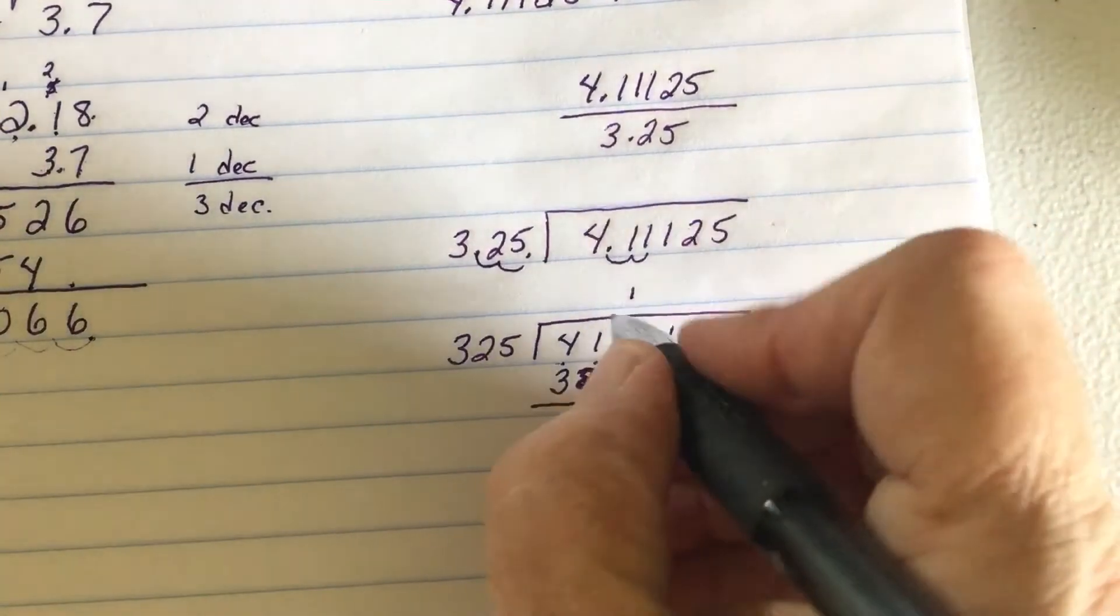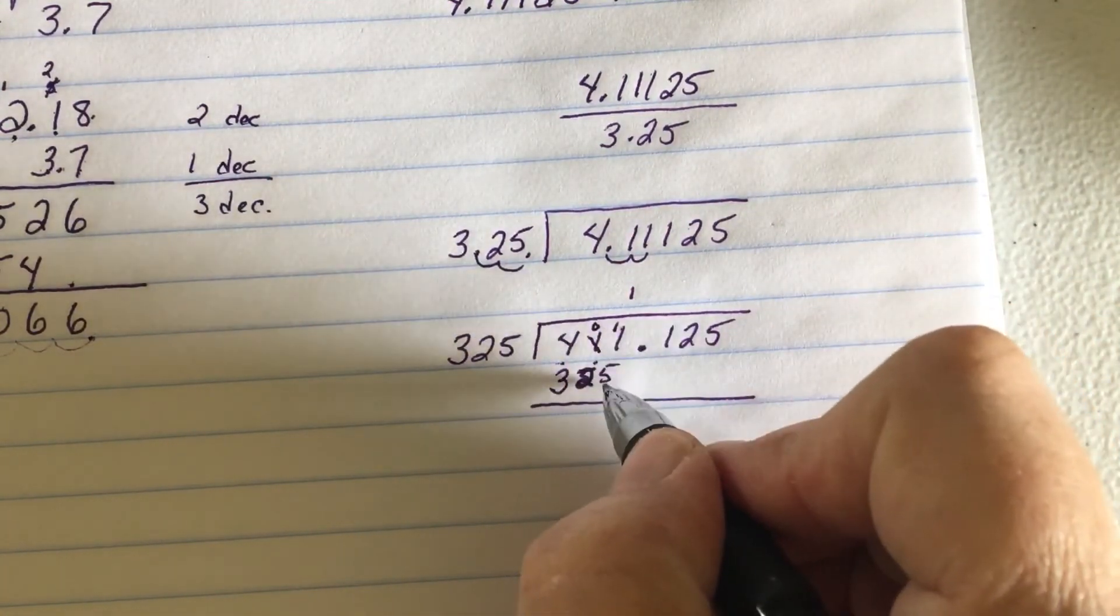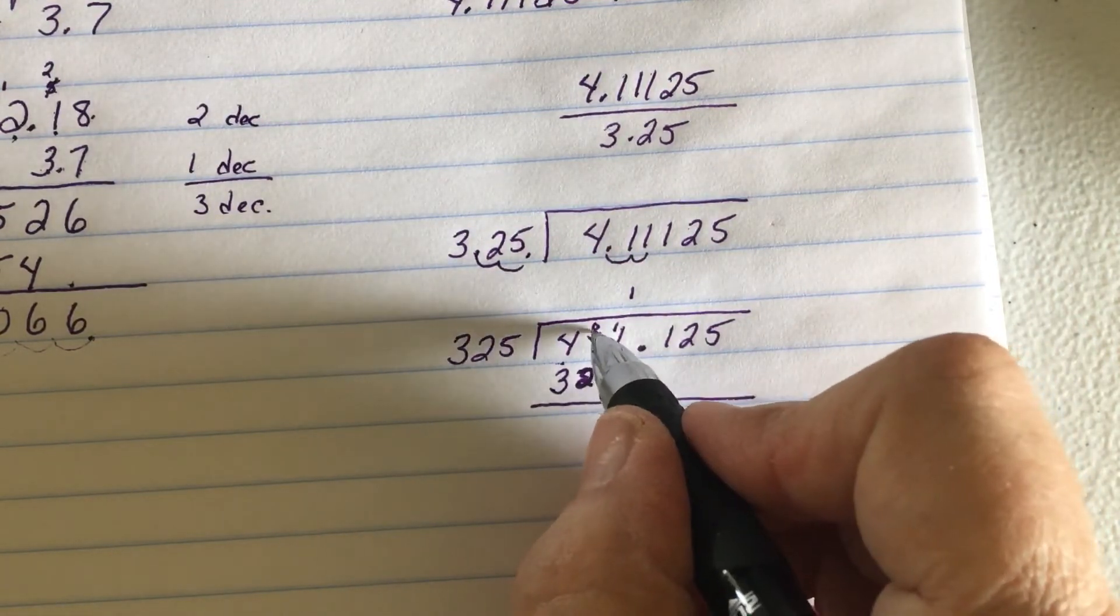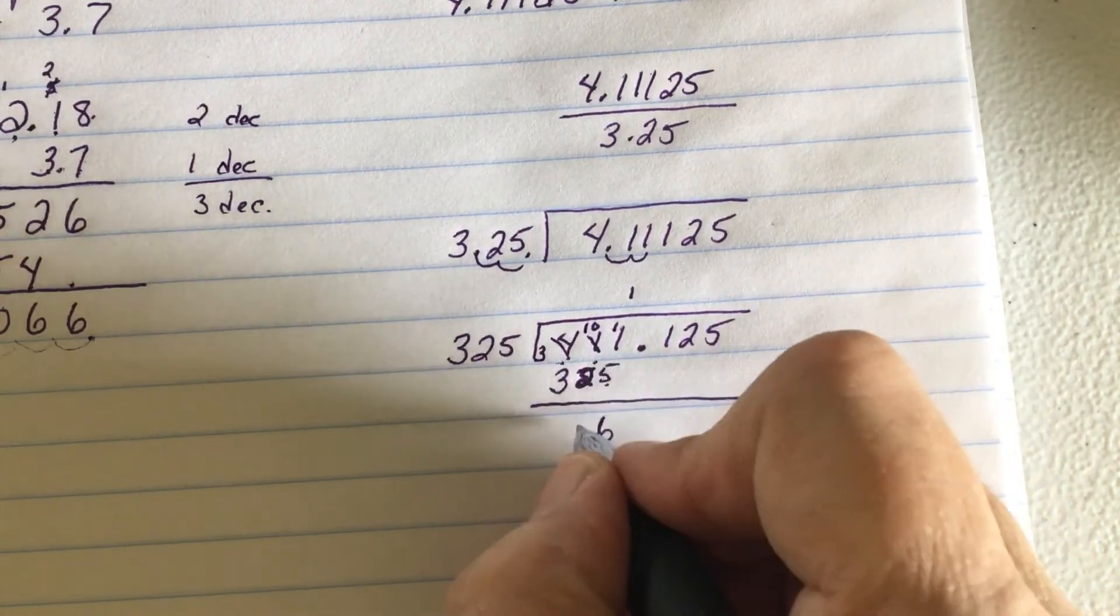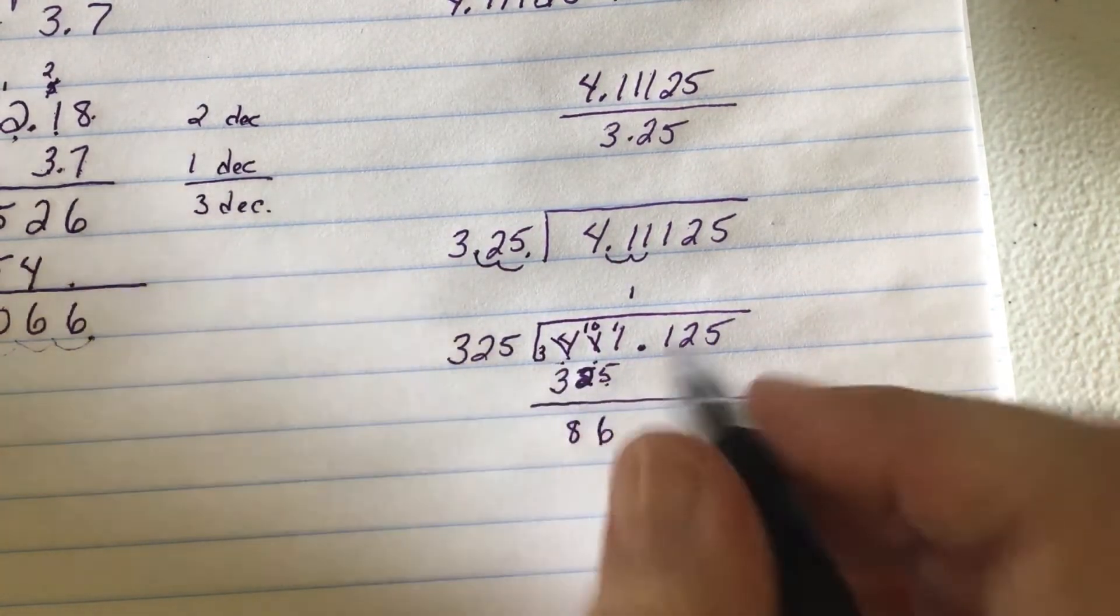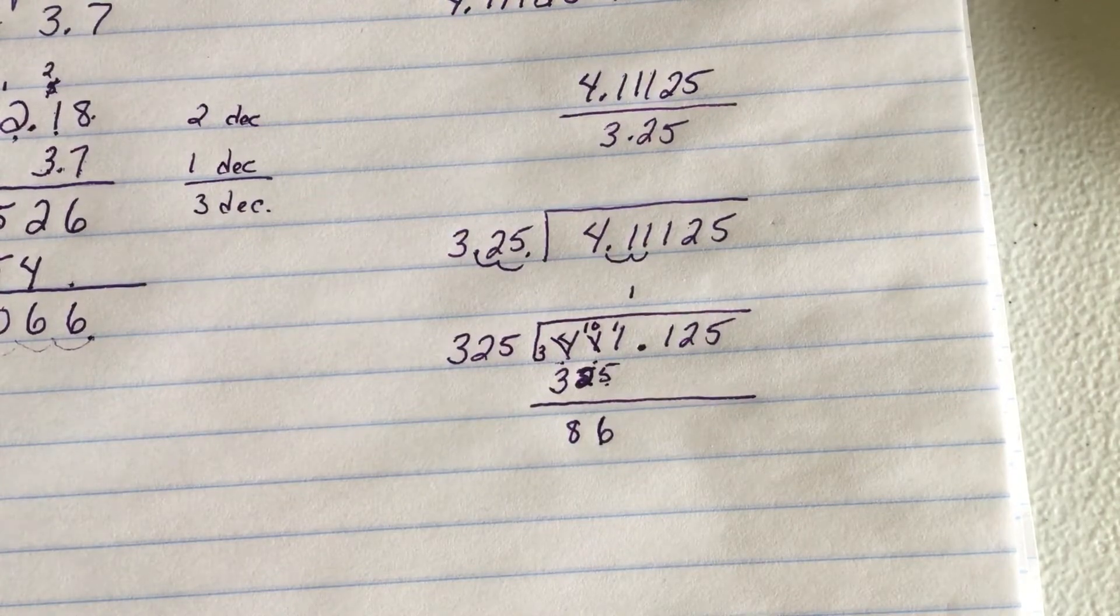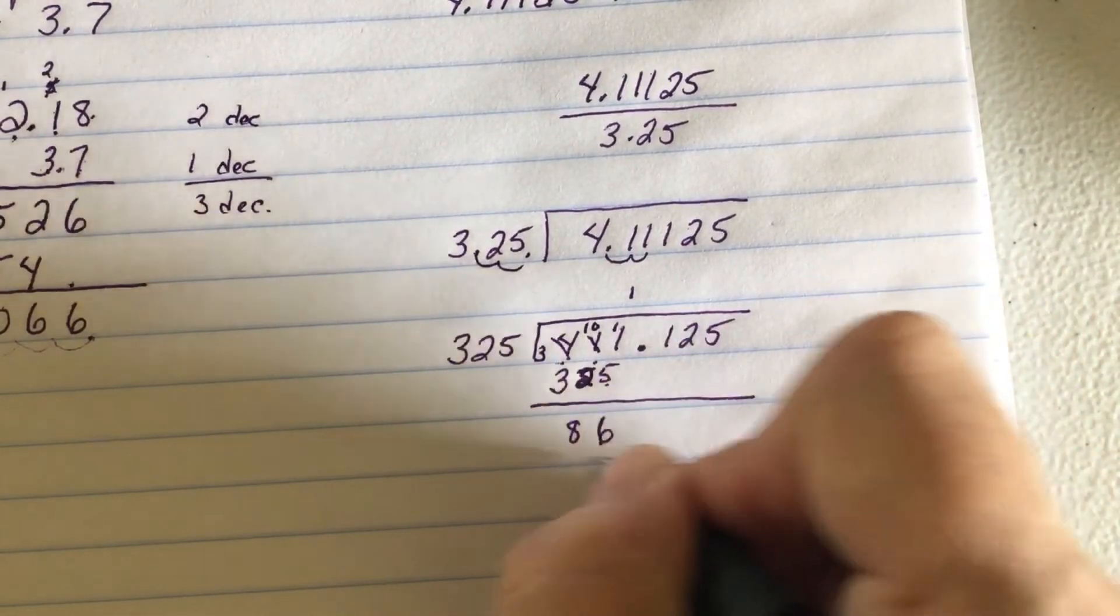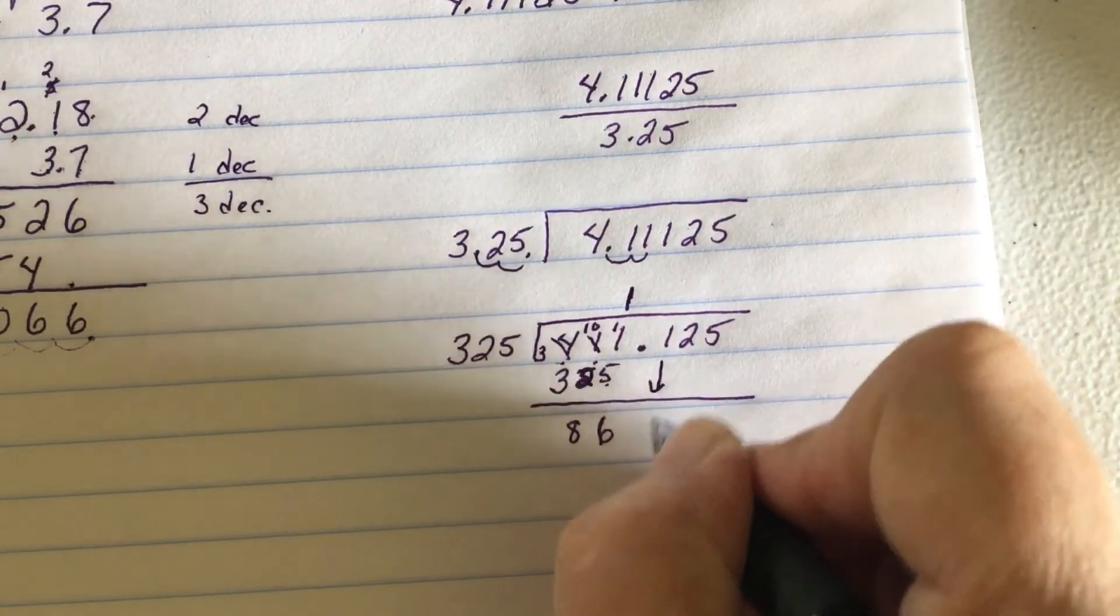So 11 minus 5 gives me 6. 0 minus 2, oh, gotta borrow. So 10 minus 2 gives me 8. 3 minus 3 gives me 0. So that leaves me 86. And that is more than that, so I'm good. And that was a 1. Alright, I'm going to drop the next number.